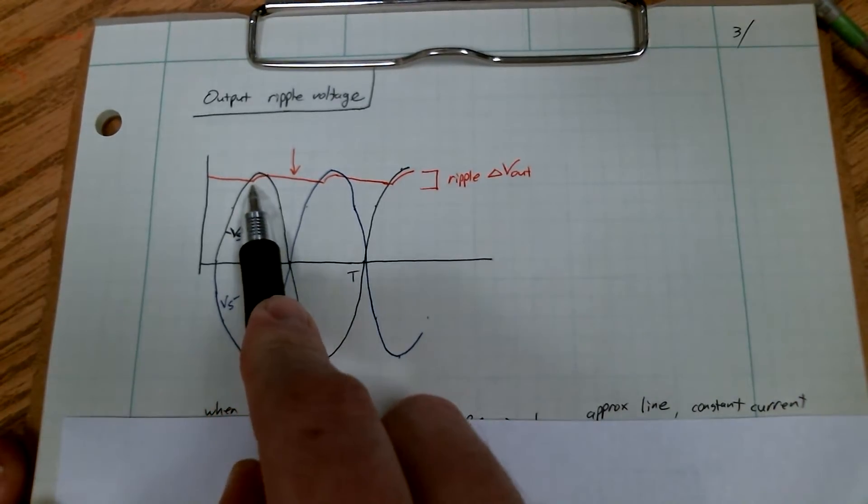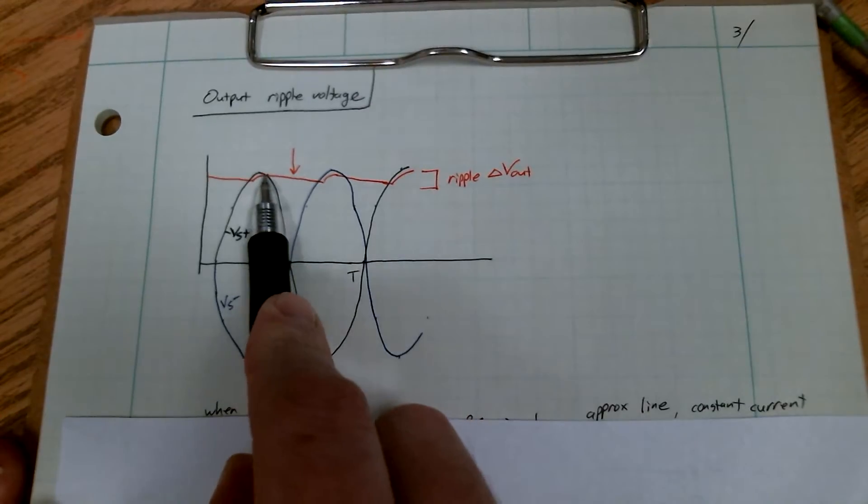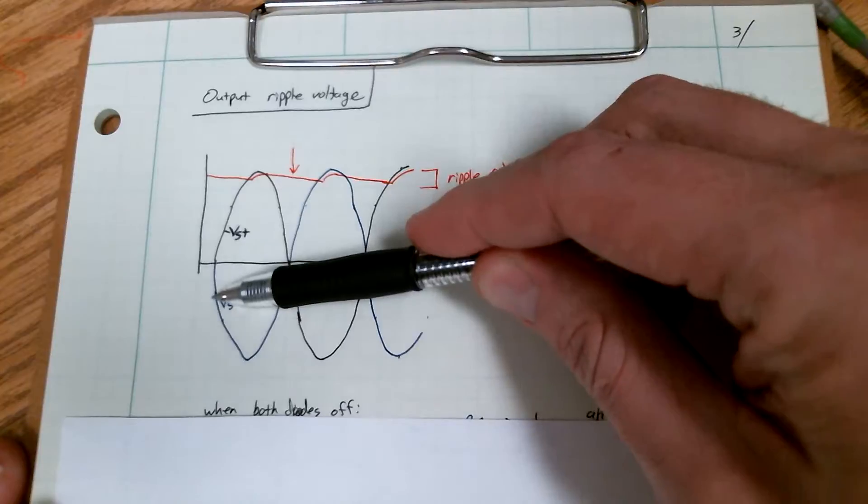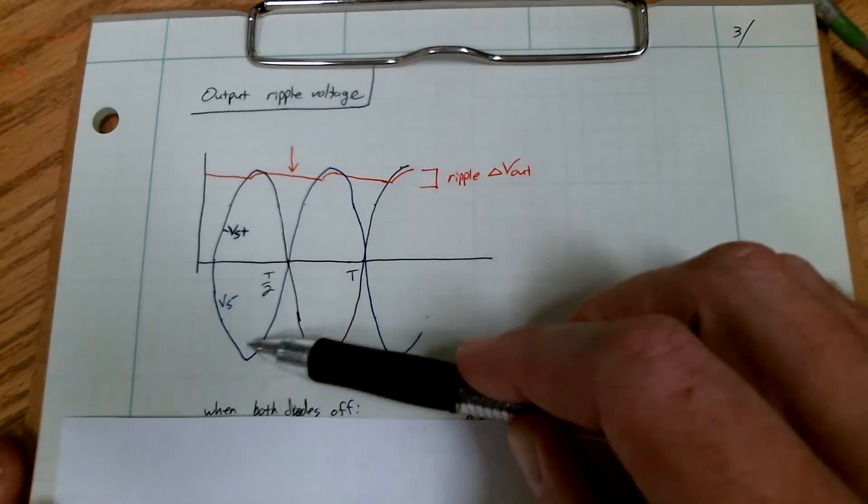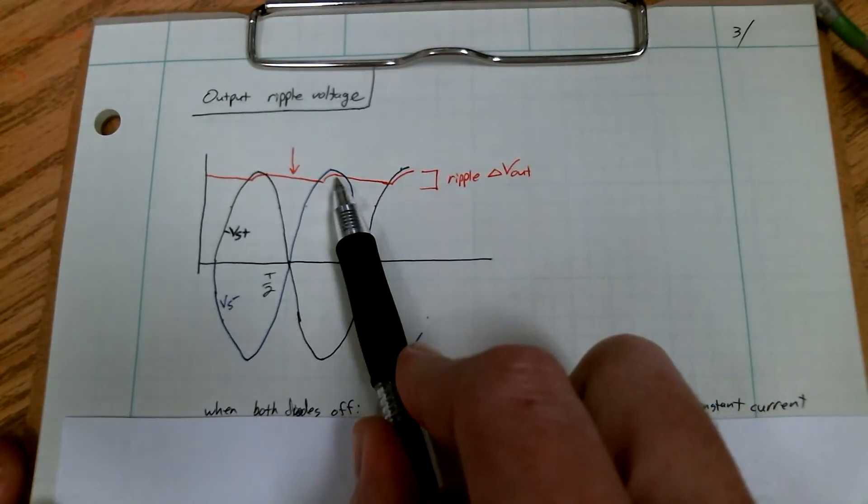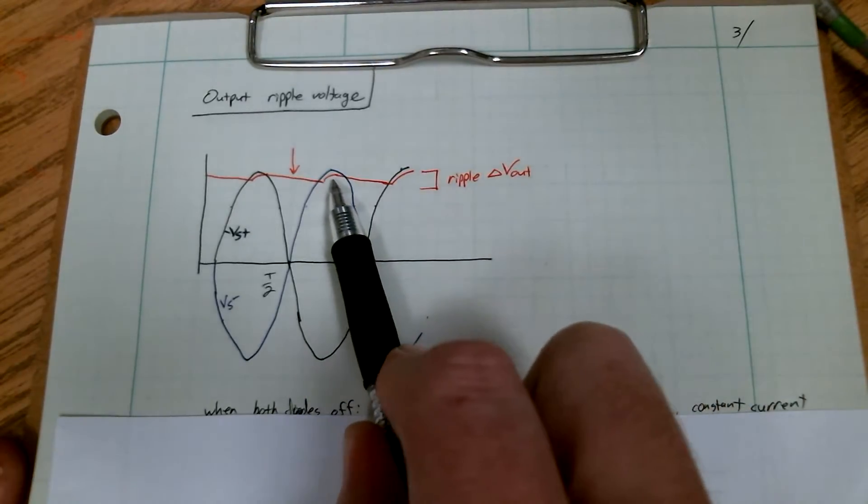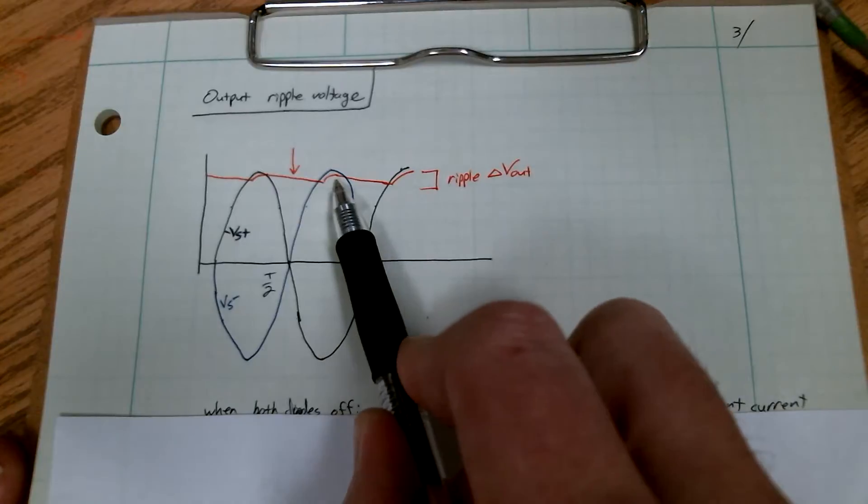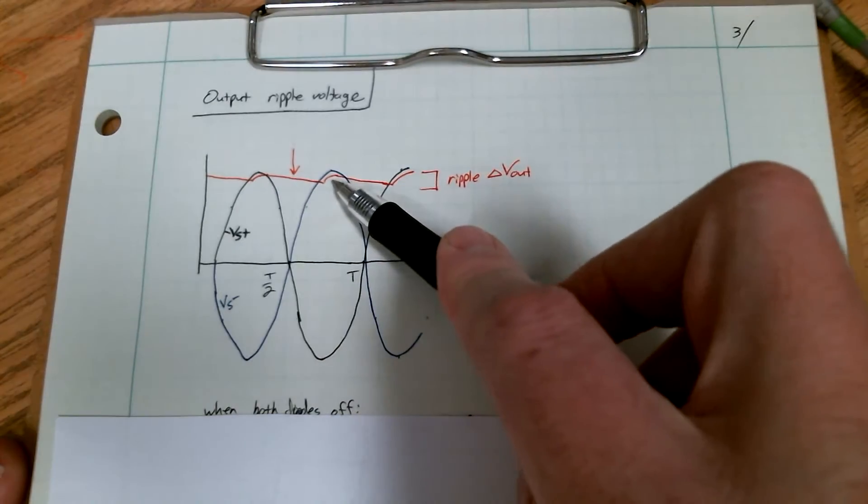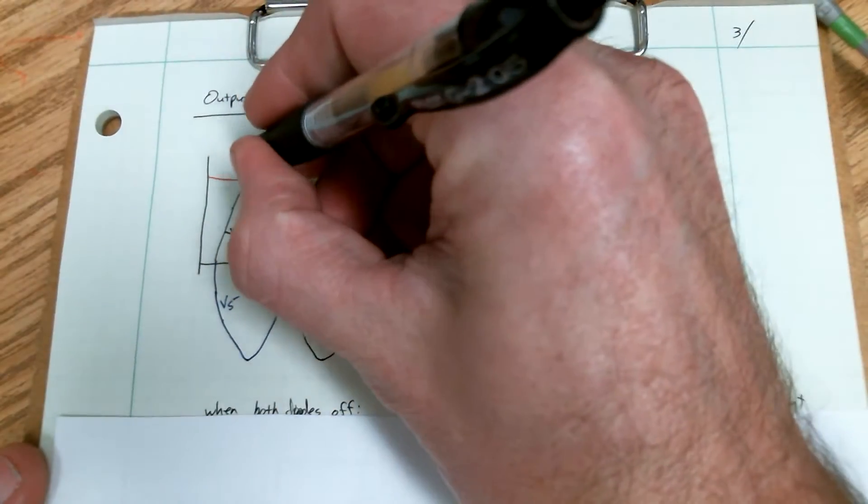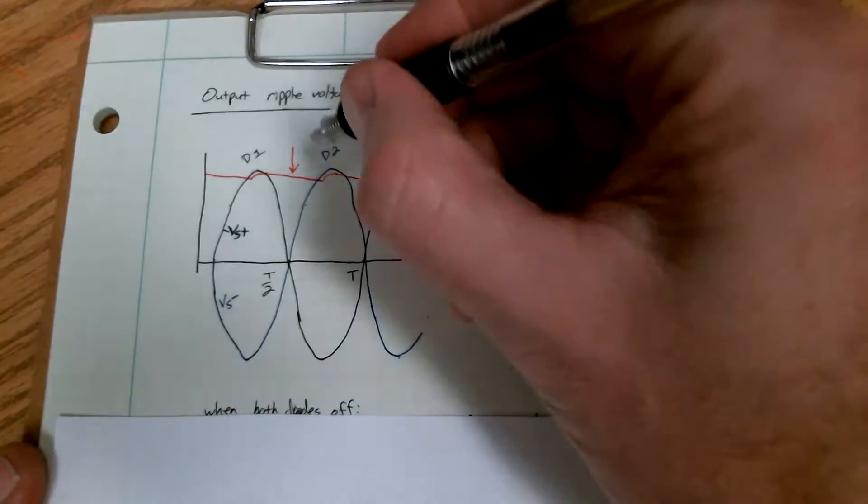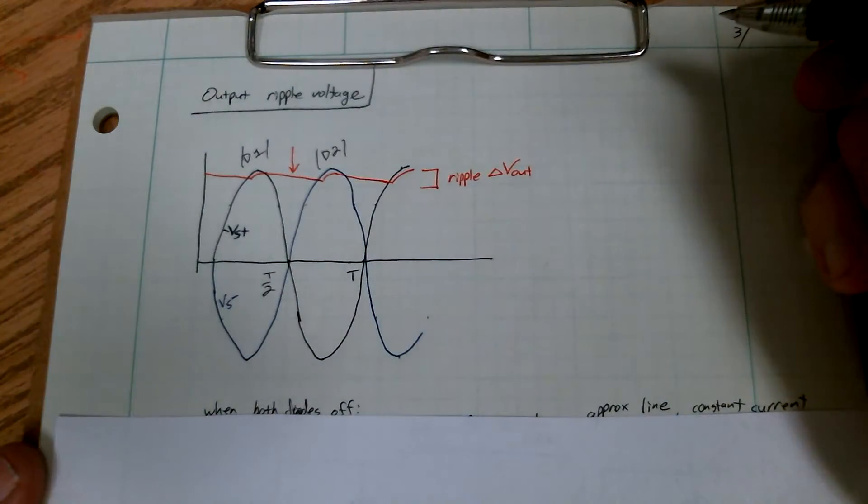At the very top is when diode one turns on, charges up our output capacitor and it bumps up a little. At the same time, the other side of the split secondary is going equal and opposite, and it comes over here a half cycle later because it's 180 degrees out of phase or negative of each other, and charges through diode two.